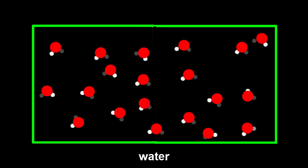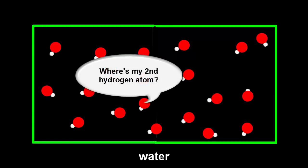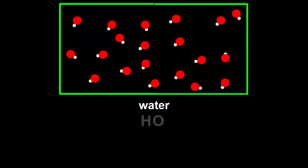Dalton was tricked because he thought that a water molecule was made of just one hydrogen atom and one oxygen atom, making its formula HO.